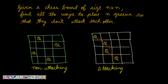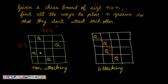Given a chess board of size n×n, we have to find all the ways to place n queens so that they don't attack each other. Here is a 4×4 chess board where we must place four queens such that no two attack each other. In this first valid configuration, all queens are in different columns, different rows, and they are not cutting each other diagonally — this is a non-attacking configuration.